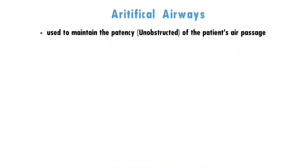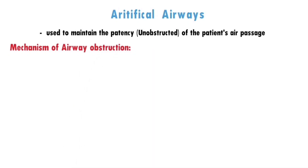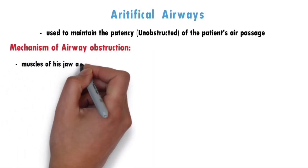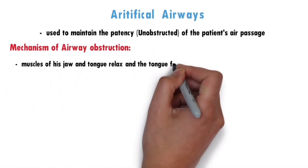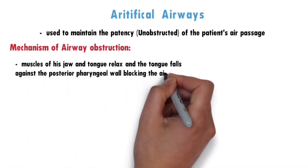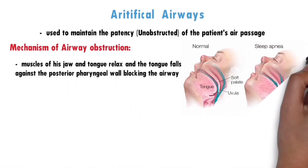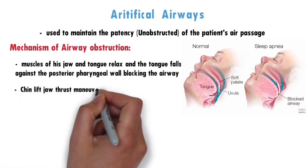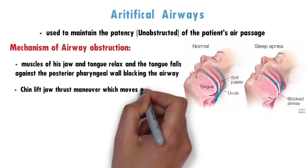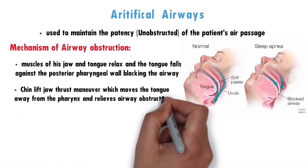Mechanism of Airway Obstruction: if the patient is unconscious and in a supine position, the muscles of the jaw and tongue relax and the tongue falls against the posterior pharyngeal wall, blocking the airway. Methods like the Chin Lift Jaw Thrust Maneuver move the tongue away from the pharynx and relieve airway obstruction.